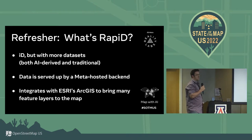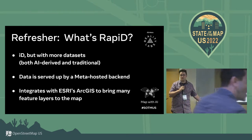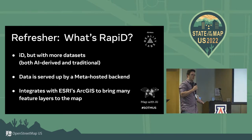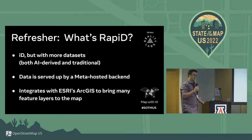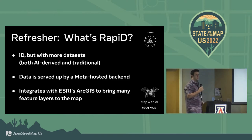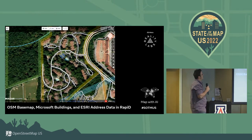So what is Rapid? It's basically ID with an extra sprinkling of datasets on top. Those datasets range from macro AI datasets provided by Microsoft, Google, and Meta, to smaller county-level datasets like what you get from our Esri integration — individual counties and townships providing authoritative datasets for things like buildings, address points, and hopefully soon roads. We have a whole backend service that serves all of this up.